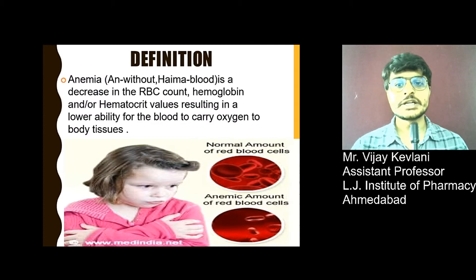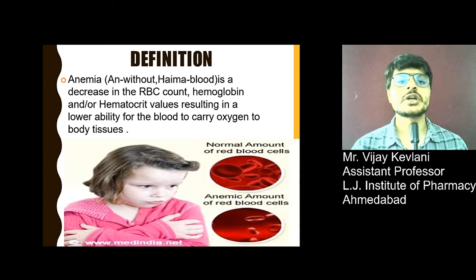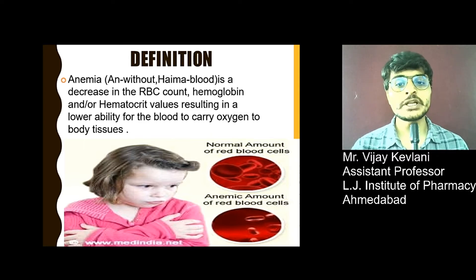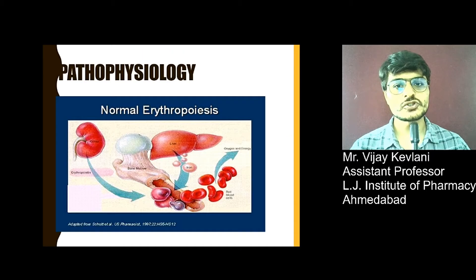Let us see the definition. Anemia — 'AN' means without and 'HEMA' means blood. Anemia is a condition where there is a decreased RBC count, hemoglobin, and/or hematocrit value, resulting in a lower ability for the blood to carry oxygen to body tissue.